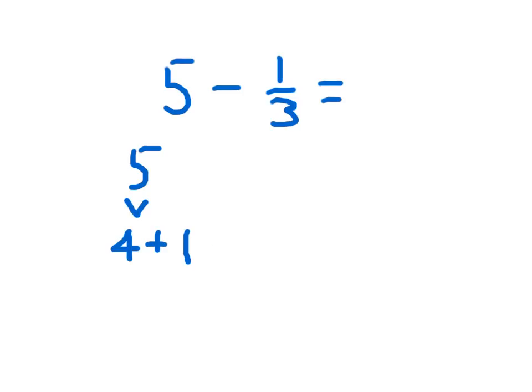And then we still have subtract and minus one-third. I think you'll also agree with me that one is equal to three-thirds. So now we have four plus three-thirds minus one-third.